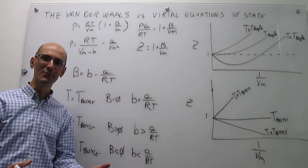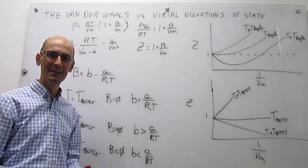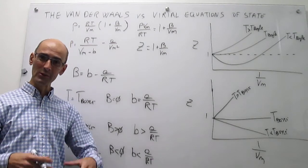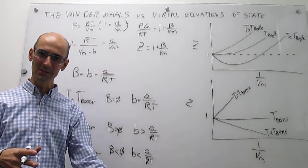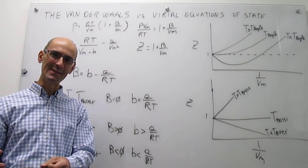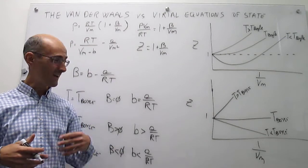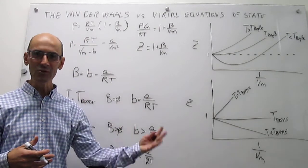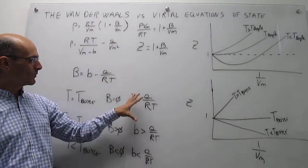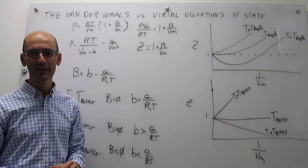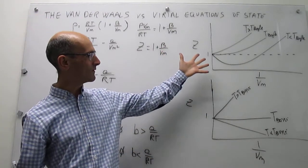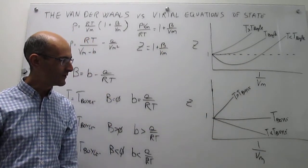This is a nice wrap-up connecting all of the work seen with the ideal gas, through the Virial Equation of State, to the van der Waals Equation of State, and the relationship between them. We now understand how the parameters in these equations relate to actual gas properties like the compression factor and the Boyle temperature.